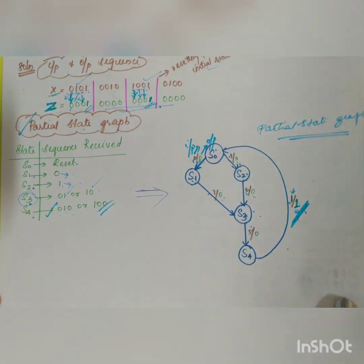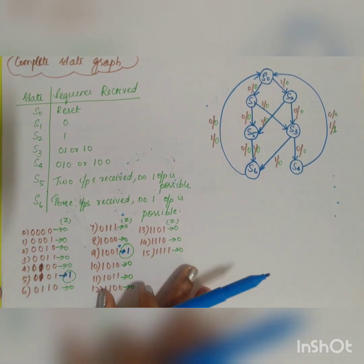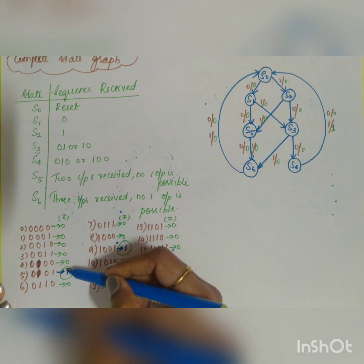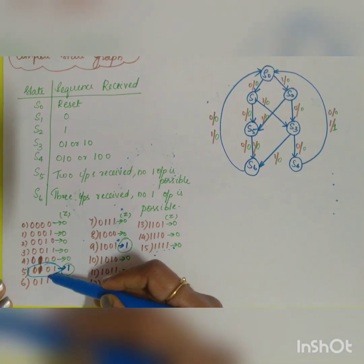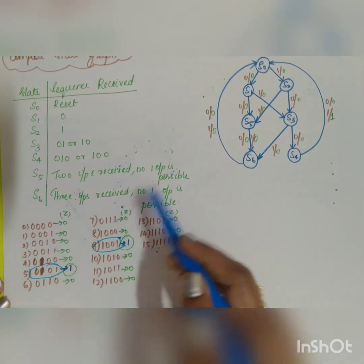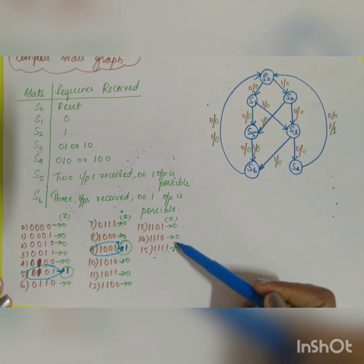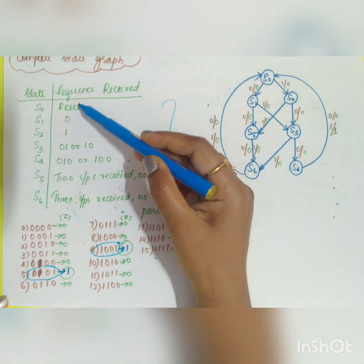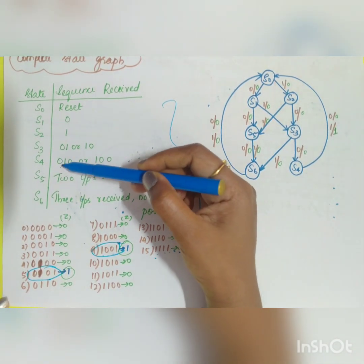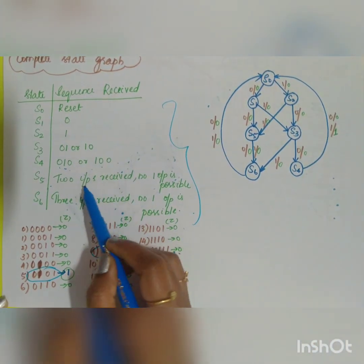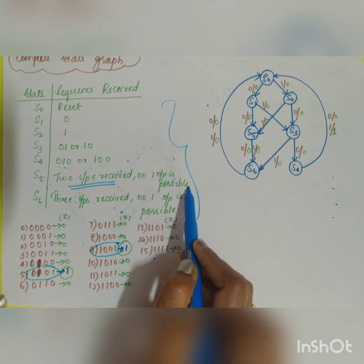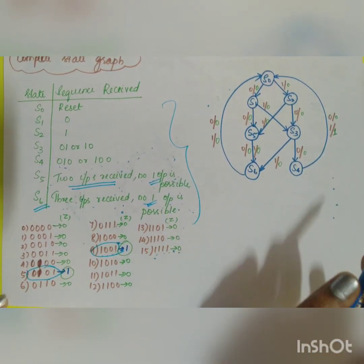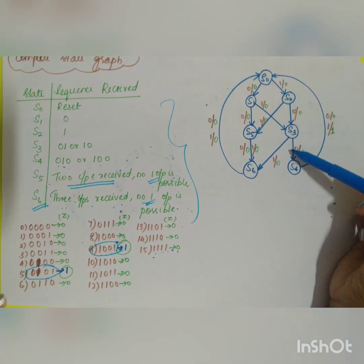The partial state graph is not complete — you must construct the complete state graph by checking all other options. You have to check all 16 combinations from 0000 to 1111. In this set, only two combinations give output=1: combination 5 (0101) and combination 9 (1001). For all other combinations the output equals 0. States S5 receives two inputs with no output=1 possible, and S6 receives three inputs with no output=1 possible.